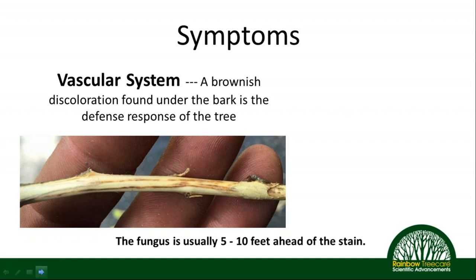It's important to keep in mind that the fungus is actually about five to ten feet ahead of the staining symptom you're seeing. So even where you don't have staining, if you're within ten feet, there's a high likelihood that the fungus is in that area. When taking samples, you want to sample as close as possible to the nearest infected leaf area to most likely see the staining.